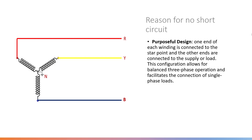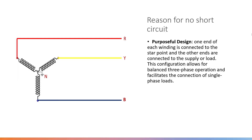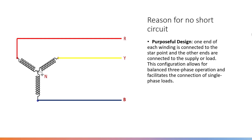The first one is purposeful design. In star connection, one end is tied together forming a neutral, and the other end is connected to a load. This configuration allows for balanced three-phase operation and facilitates the connection of single-phase loads. In star connection, we can generate both phases R, Y, B and neutral. One phase plus neutral equals a single-phase connection, so single-phase connection is also possible in star configuration. This is one of the reasons for no short circuit.